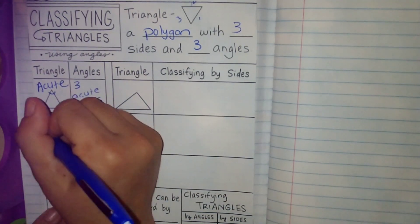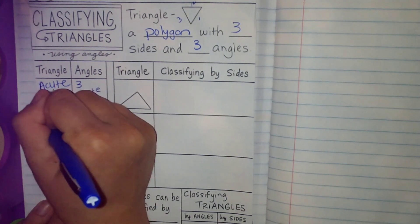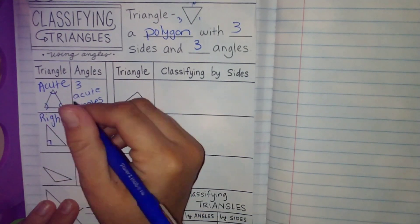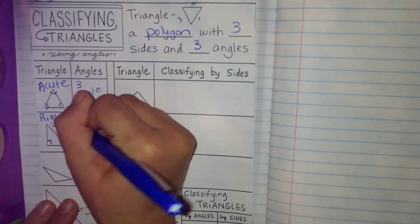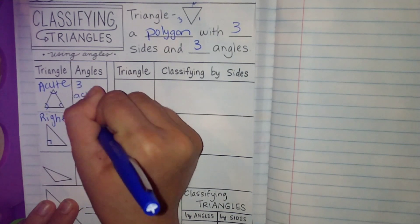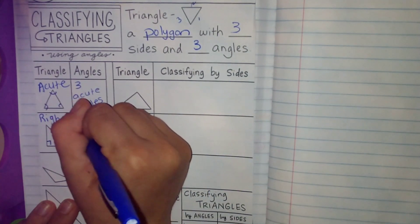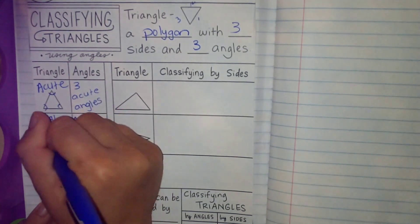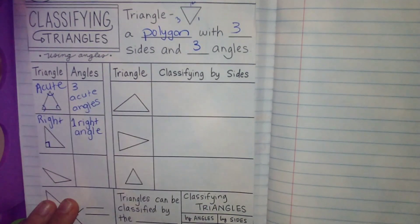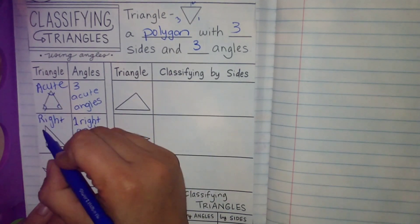We also have a right triangle. The right triangle has one right angle, which is exactly 90 degrees. And we can tell that by the box that I just created.